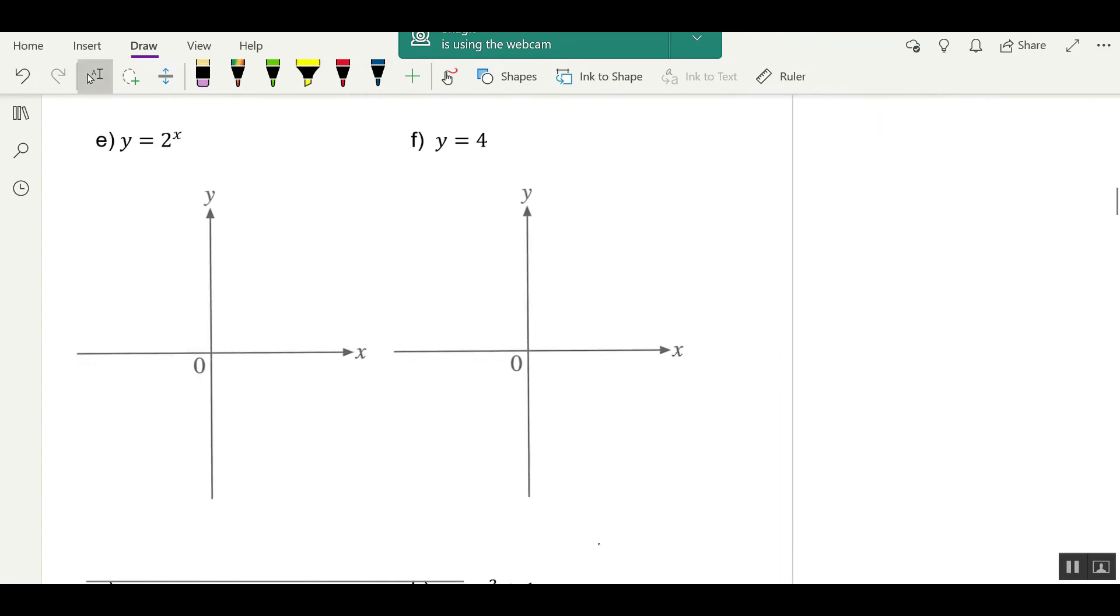Next, 2 to the power of x. Can you remember? Start very close to the axis. Aeroplane taking off. y equals to 2 to the power of x. How to find this? When x is equal to 0, y would be equal to 2 to the power of 0, which is equal to 1. So this is 1.